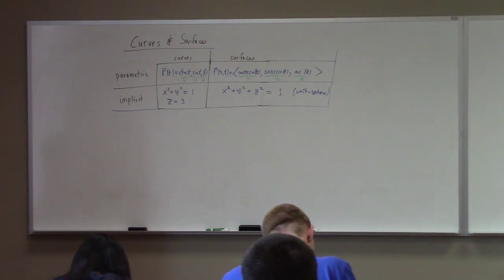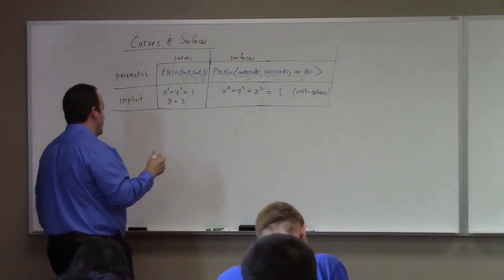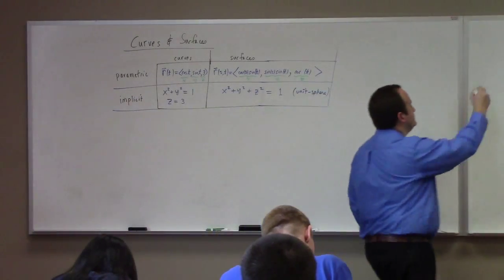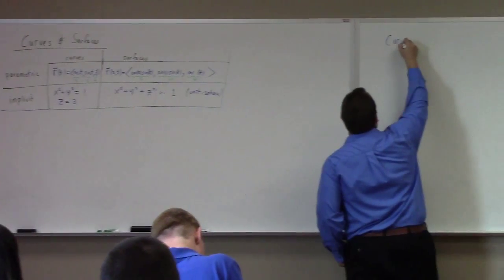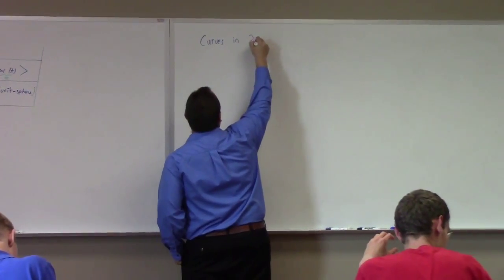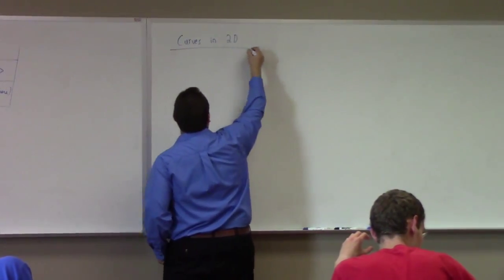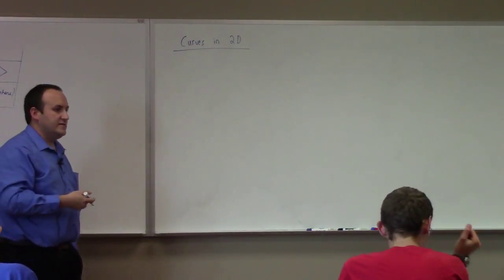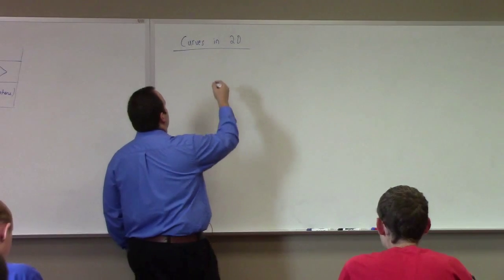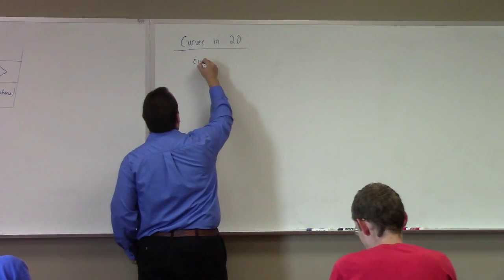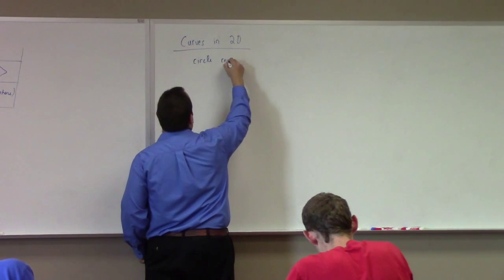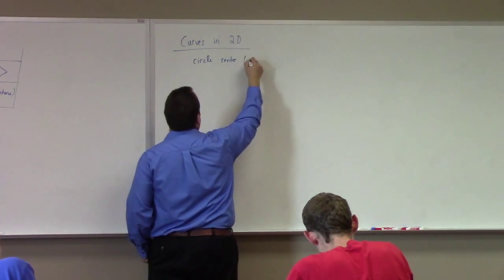Now that I've shown you the forest, let me show you some trees. Let's talk about curves in two dimensions. We already did lines, so I won't talk about those. But you can talk about a circle — center x-naught, y-naught — and radius r.